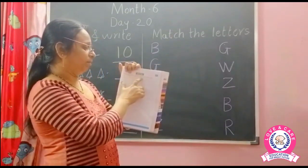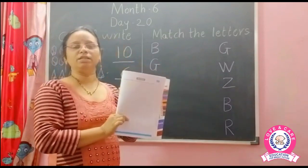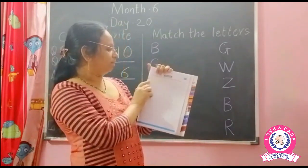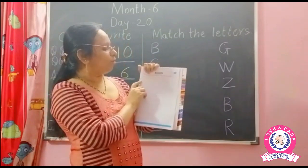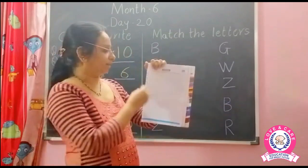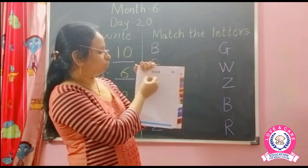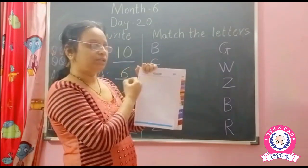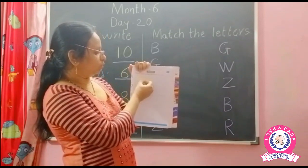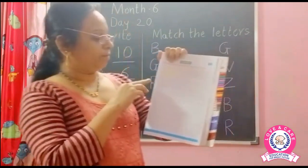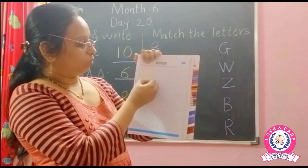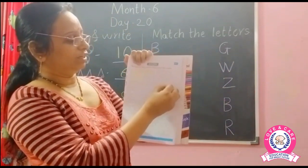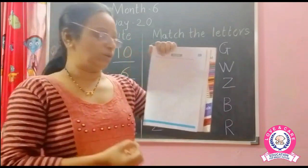Now next — recognize the number and color the circles. This concept is: however many numbers are given to you, color that many circles. So first number 5 — from the balls here, only 5 balls you need to color. Color the 5 balls: 1, 2, 3, 4 and 5. Next number 3 — color 3 balls: 1, 2, 3. Next, 10 — color 10 balls: 4, 5, 6, 7, 8, 9 and 10. Color 10 balls. So please complete the page.